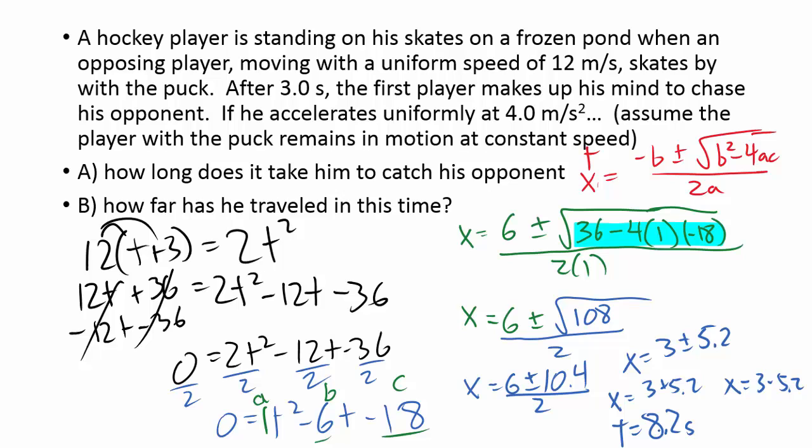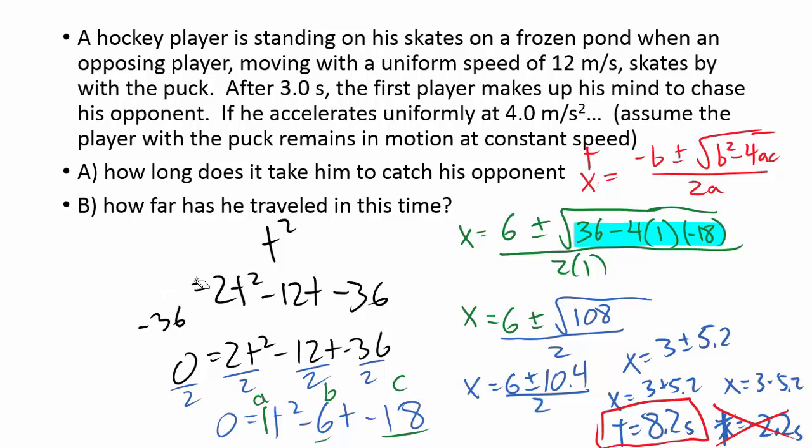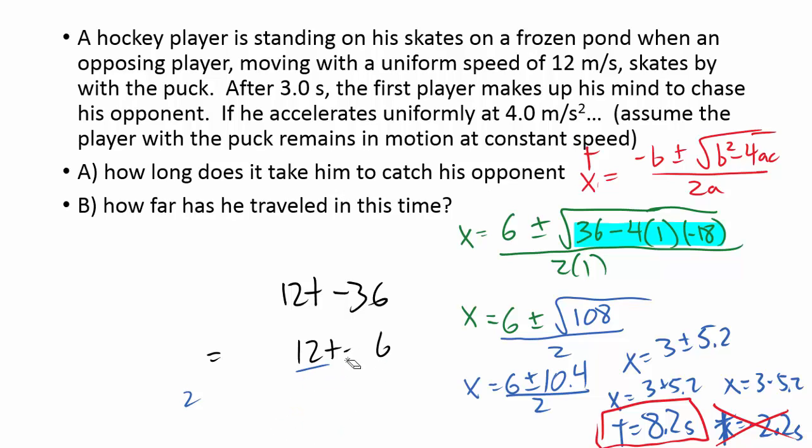So one answer that we have is that the chaser would catch the skater at 8.2 seconds. For this part, if we subtract, you'll find that this would tell us the skater would be caught at negative 2.2 seconds. So we have two answers here, but we really shouldn't have two answers to the problem. There should be one that works. And you can tell right here that negative time isn't really going to make sense. So it's not going to make sense, that negative 2.2 answer. The only one that's going to make sense here is 8.2 seconds. So we've just answered part A, that it takes 8.2 seconds for the chaser to catch the skater.